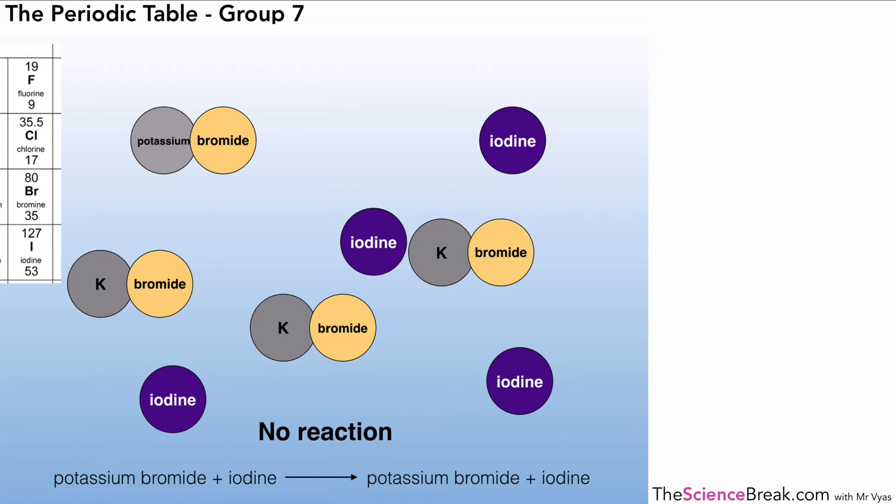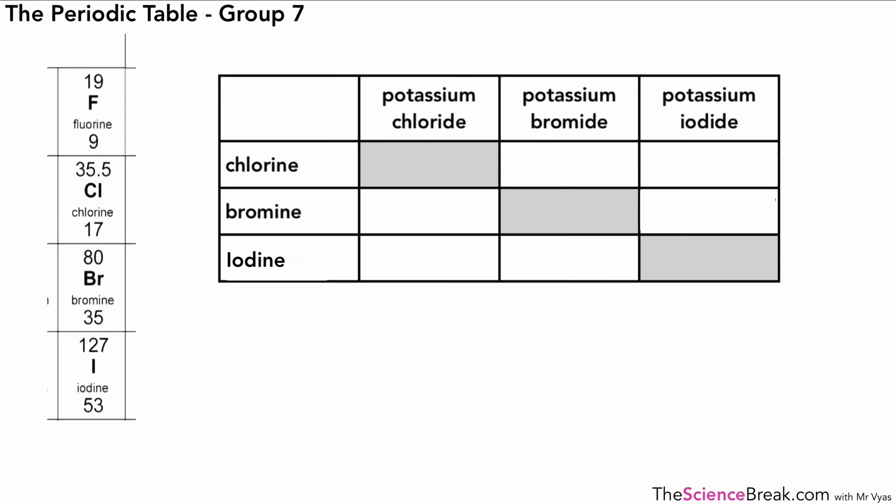And what it might be worth doing now is having a go at a couple of examples. So here we've got a table with some salts and our halogens. So the way it works is that down the left hand column there, these are the halogens going downwards and going across, these are some examples of some salts. If we look at this box here, potassium bromide reacting with chlorine, we can write down whether there's a reaction or not. And we've done this one already. So we get potassium chloride and bromine. Might be worth pausing here, have a go at this yourself and see what you come up with.